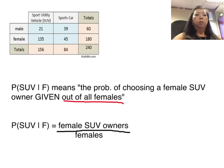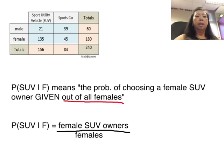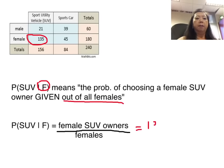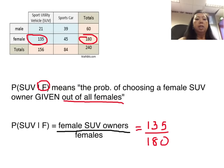What if we reverse it? P of SUV bar F means the probability of choosing a female SUV owner — again both qualities — given a total out of all females. Notice the second event is your denominator. So the fraction is 135 female SUV owners out of 180 total females. When you reverse the condition in the conditional probability, you end up with a different fraction. The numerator is still the same people; only the denominator changes.